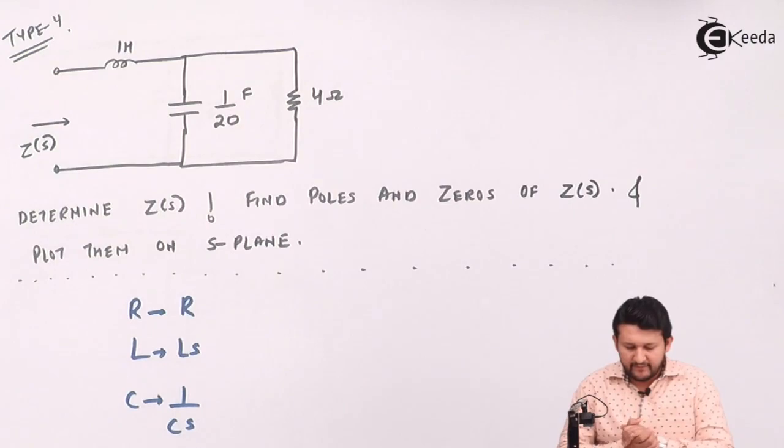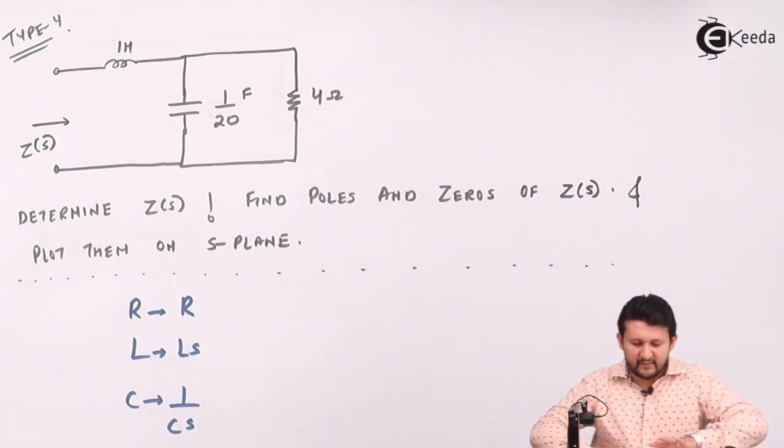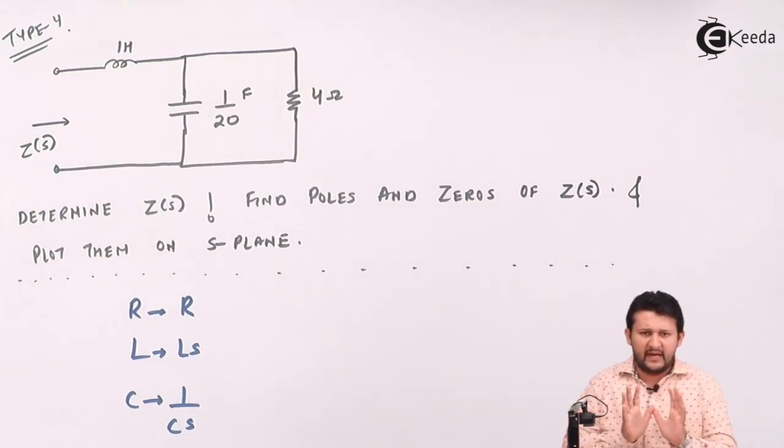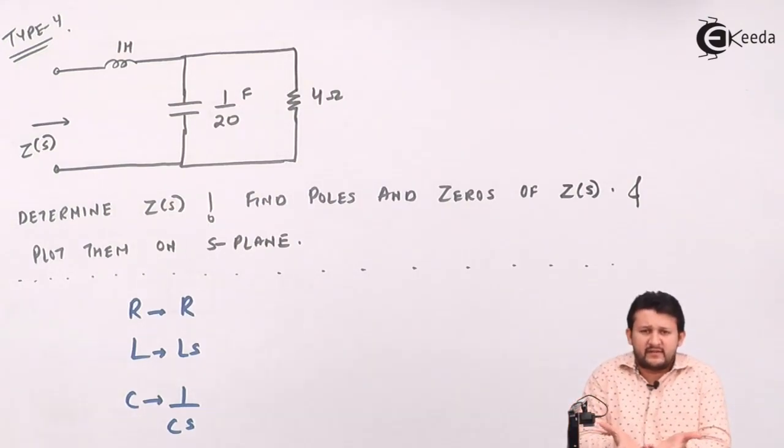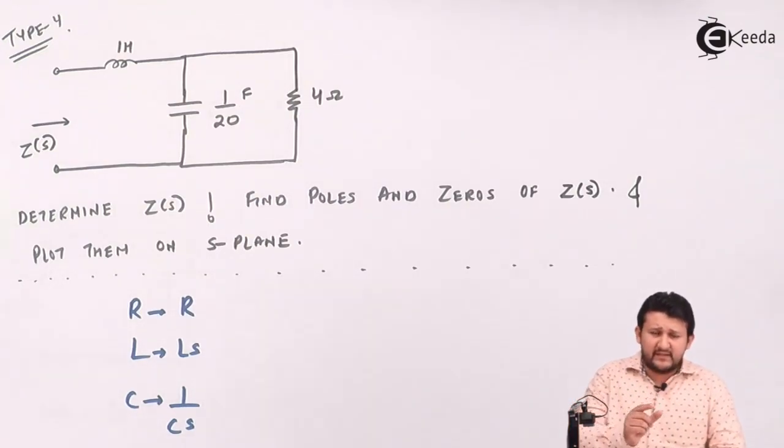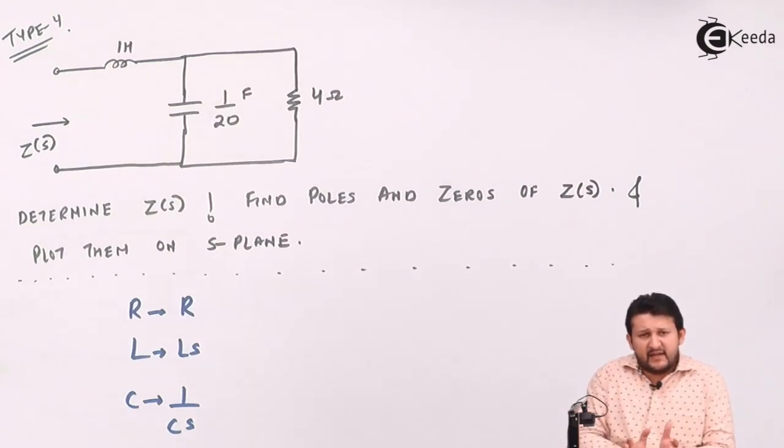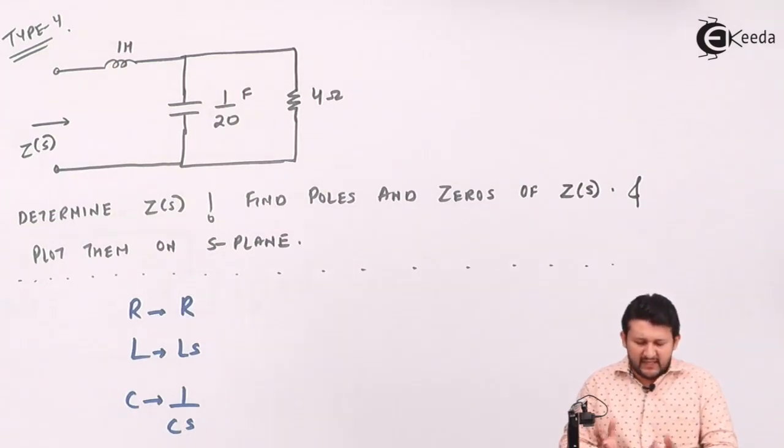So guys, let's have a look at Type 4. This Type 4 is similar to your Type 3. 80% is purely similar. Then the question is, what is the difference? That 20% is your pole at zero. That is the reason we call it Type 4. So let's have a look.